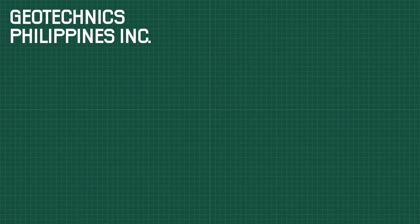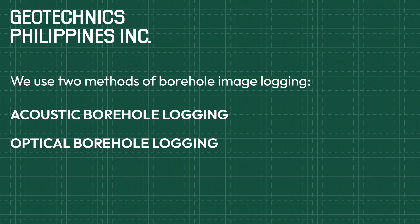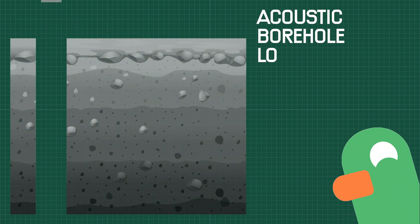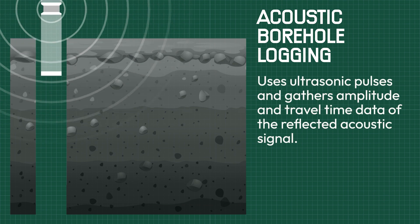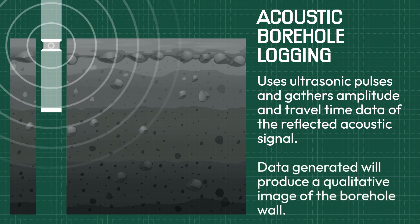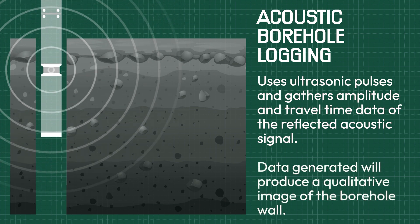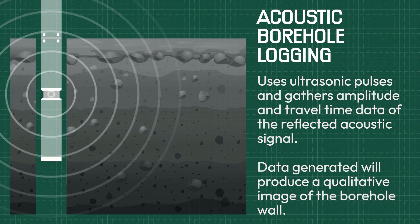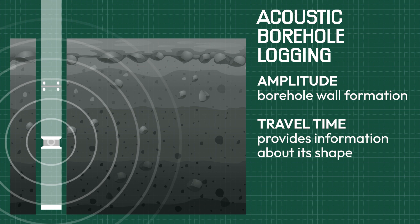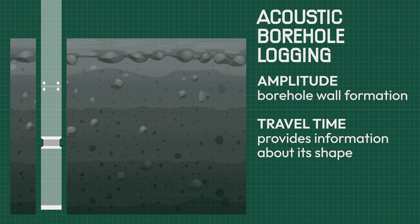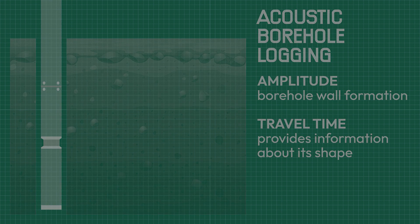Geotechnics Philippines Incorporated uses two methods of image logging: acoustic and optical. The first method, acoustic borehole logging, uses ultrasonic pulses and gathers amplitude and travel time data of the reflected acoustic signal. The data generated by the ultrasound will produce a qualitative image of the wall of the borehole. The amplitude represents the formation of the wall while the travel time provides information about its shape. Basically, think of it just like an ultrasound or sonograph, but for rocks.